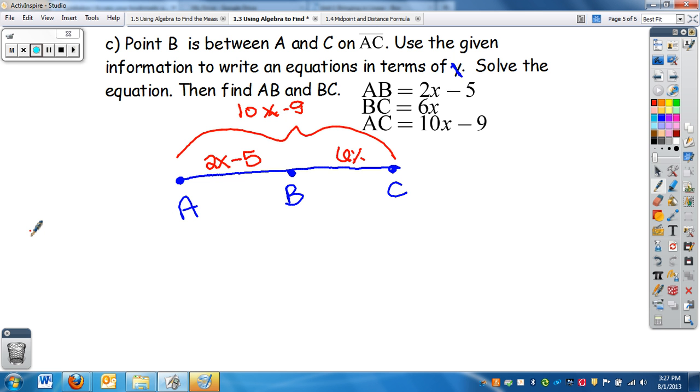So we know the entire segment is made up of two smaller segments. If I add AB, this length, to that length, and you don't need to do this step. I just do it to help you figure out what's going on. All right, so AC, we know that's 10x minus 9 equals 2x minus 5 plus 6x.